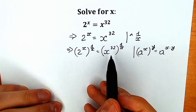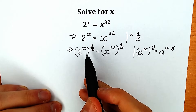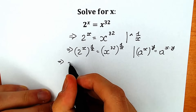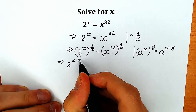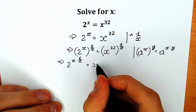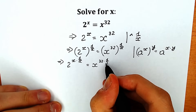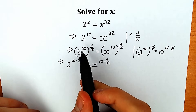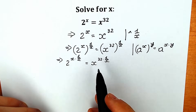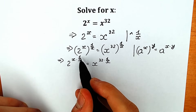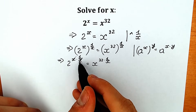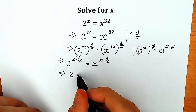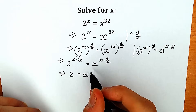Let's apply this property on both sides. On the left side, we multiply the exponents: 2 to the power x times 1 over x, equal to x to the power 32 times 1 over x. On the left side, x times 1 over x cancels, so we have only 2. And on the right side, we have x to the power 32 over x.